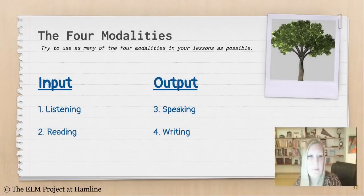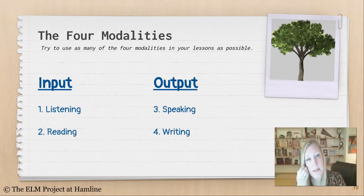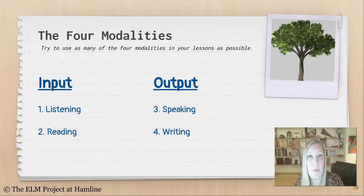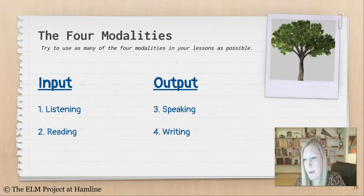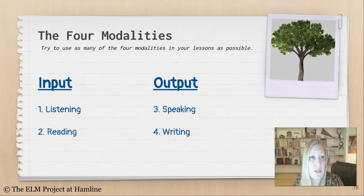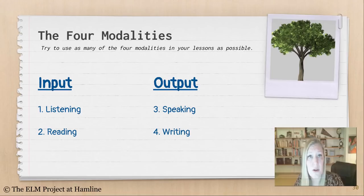Integrating academic language objectives: when thinking about lessons, think about how you can integrate as many of the four modalities as possible. In language, we take language in through listening and reading — otherwise known as input — and we put language out through speaking and writing — otherwise known as output. It's good cognitively for us to be thinking in all of these different ways. A good teacher thinks about how to get students listening, reading, speaking, and writing all the time. We want students to be trying out new words and new structures both by speaking and writing them, and by listening and reading.